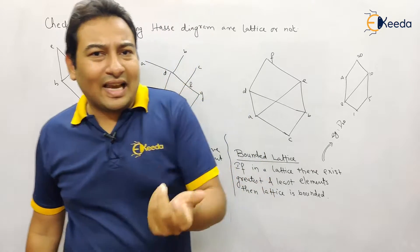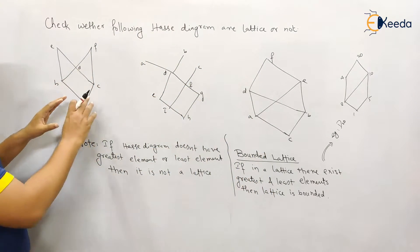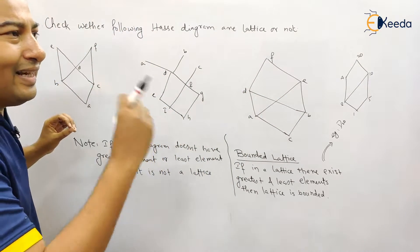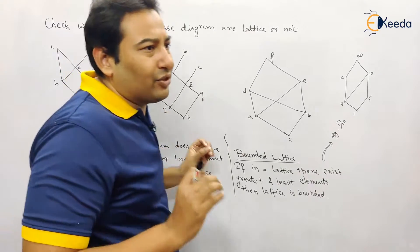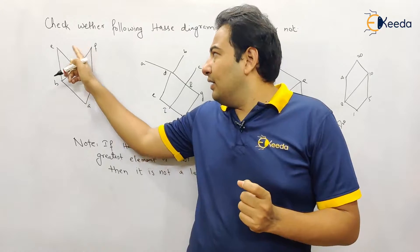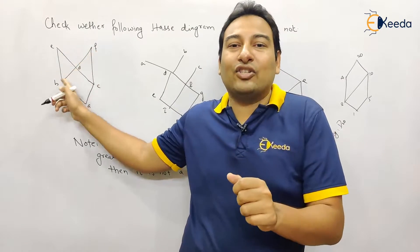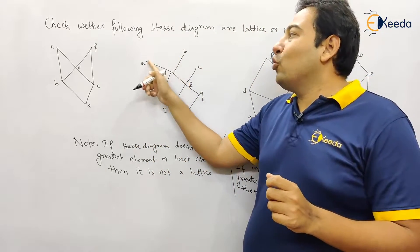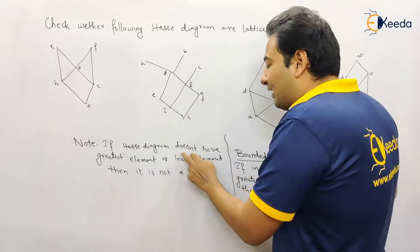The point is: if a Hasse diagram does not have a greatest or least element, then it is not a lattice. See here — this is your Hasse diagram. What is the greatest element? There is no greatest element, therefore it's not a lattice. What about this one? Again, there is no greatest element, so it's not a lattice.